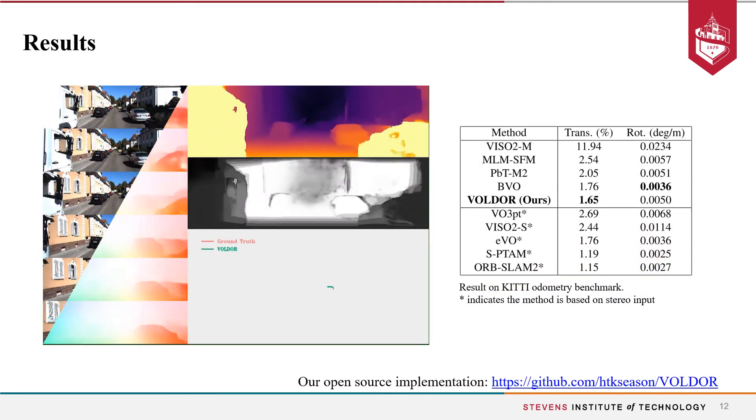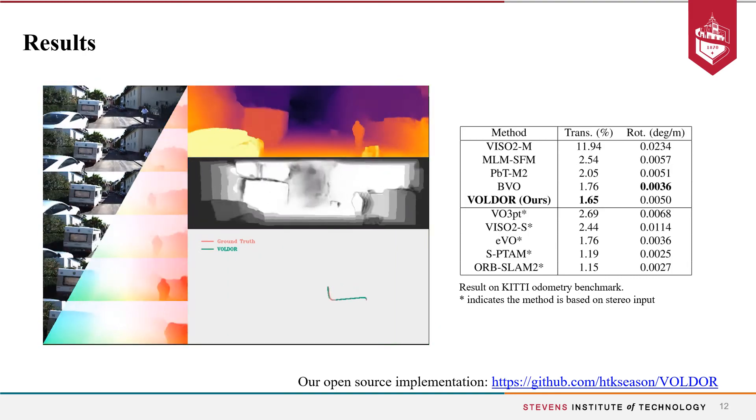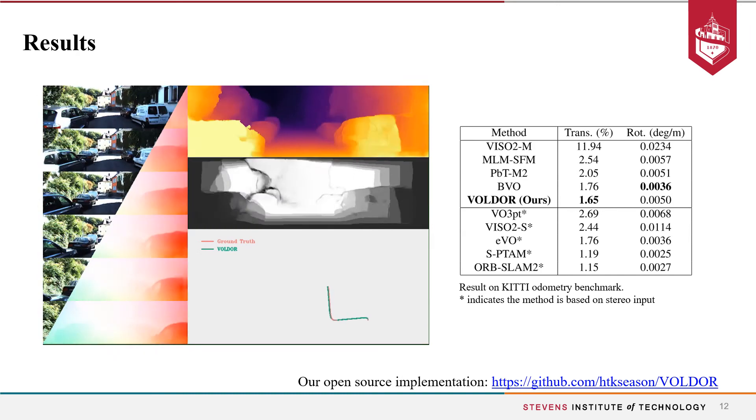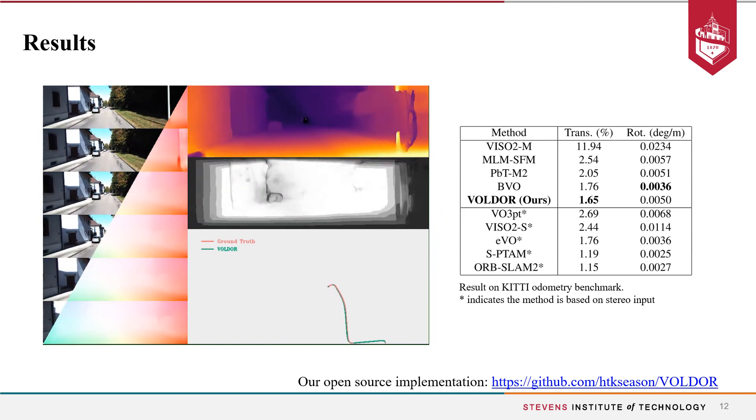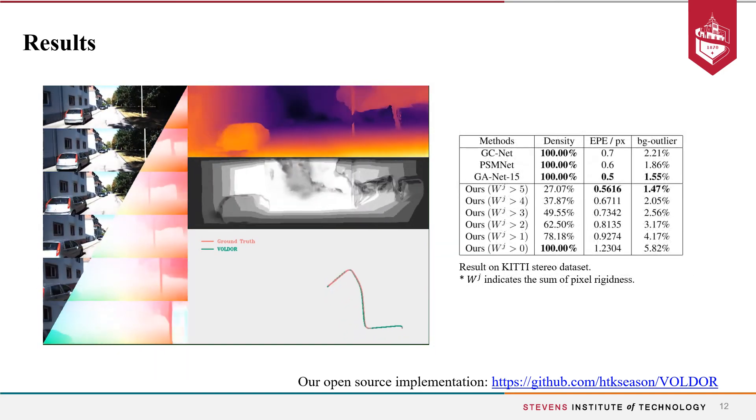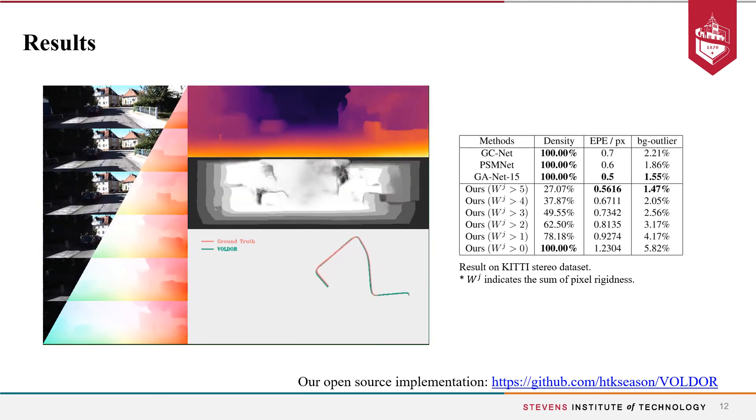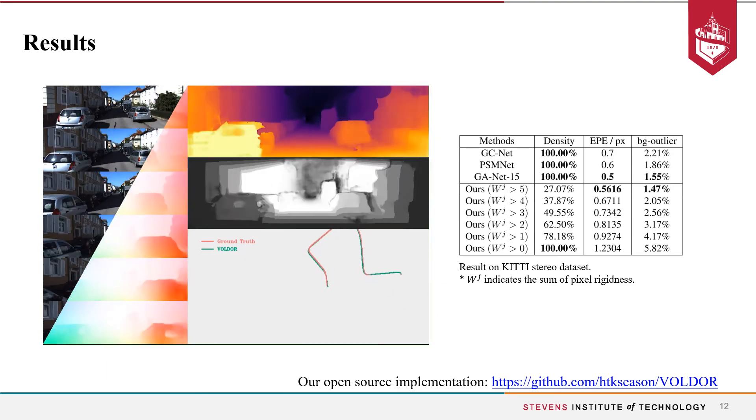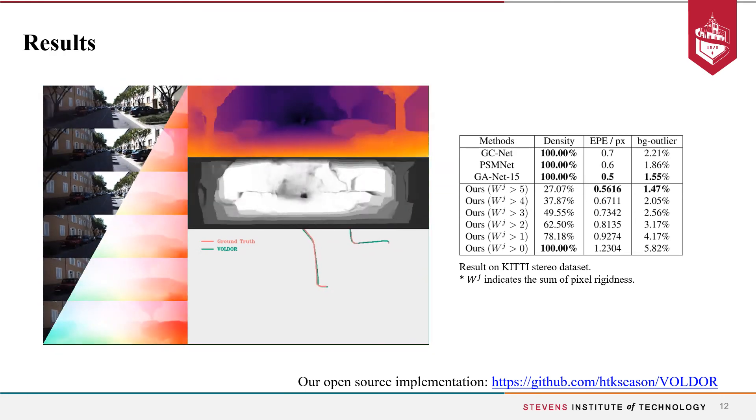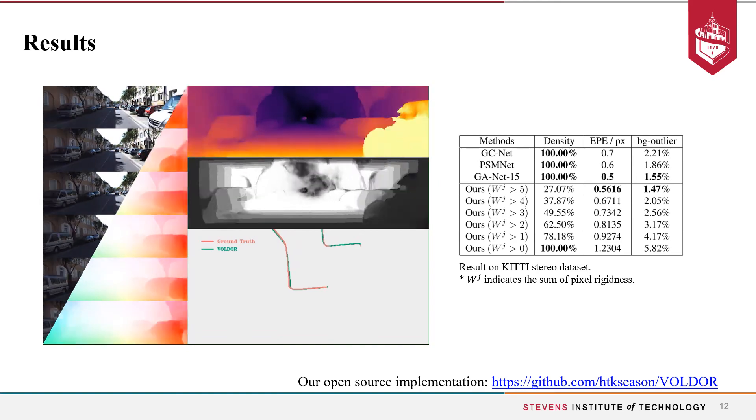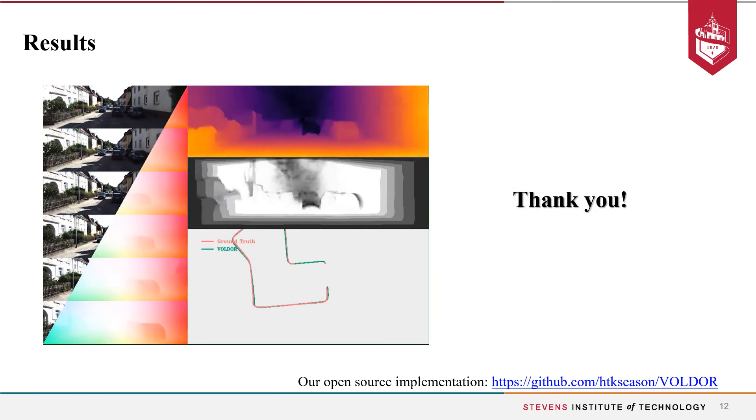Our method achieved state-of-the-art visual odometry accuracy among monocular view methods on KITTI dataset. We used PWC-Net as our optical flow input, and the scale is estimated assuming fixed and known camera height from the ground. We also tested our depth map quality with respect to different pixel rigidnesses, where the subset of pixels with high rigidness achieved satisfying accuracy. Our open source implementation is publicly available at the link below. Thank you for listening, and please visit our paper for more details.